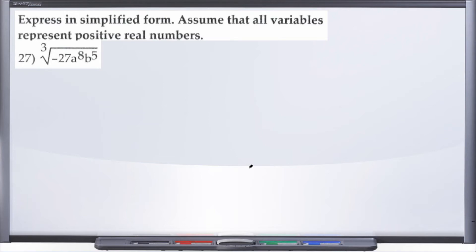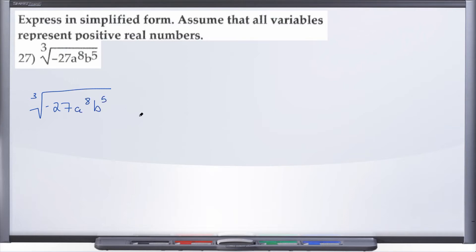Let's take a look at number 27. We're still expressing in simplified form and assuming that all variables represent positive real numbers. We've been given the cube root of negative 27 a to the eighth b to the fifth. Let's go ahead and see what we can do with this.